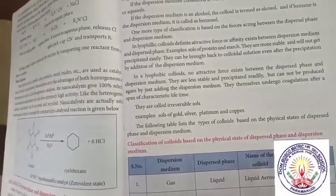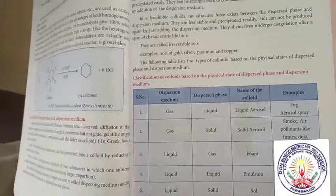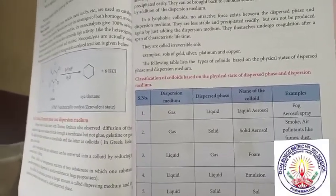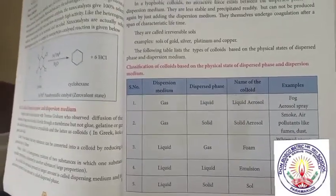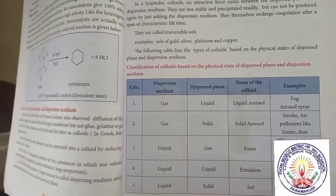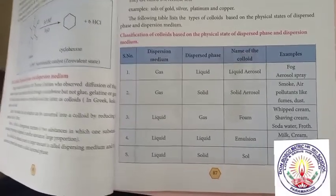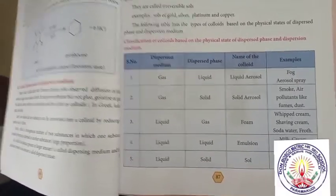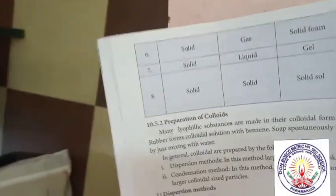The following table lists typical colloids based on the physical states of dispersion phase and dispersion medium. When the dispersion medium is gas and dispersion phase is liquid, the colloid type is liquid aerosol — example: aerosol spray. Gas in solid gives solid aerosol — example: pollutants like fumes and dust. Liquid in gas gives foam — example: whipped cream, shaving cream. Liquid in liquid gives emulsion — example: milk, cream. Liquid in solid gives a gel — example: inks, paints. All of you turn over page number 88.